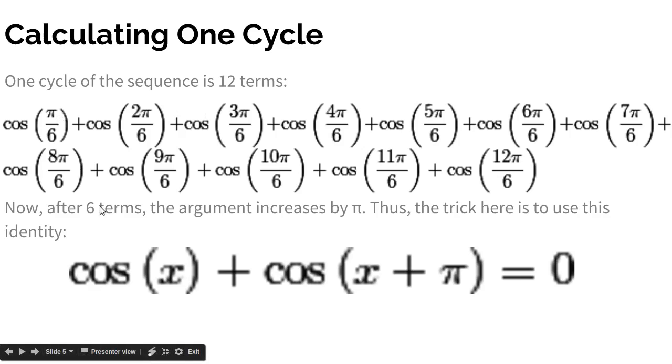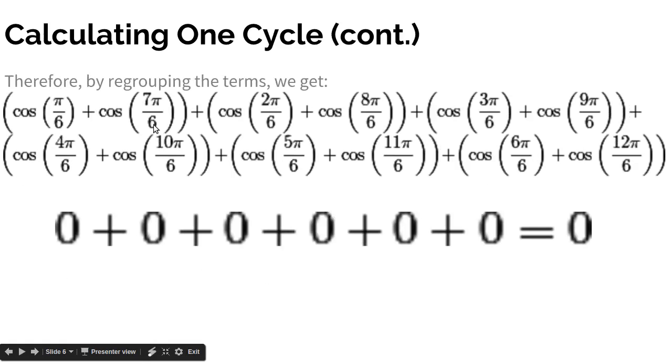You see, after 6 terms, the argument increases by π. And there's another identity with cosine that involves adding the argument by π. Cosine of x plus cosine of x plus π equals 0. So that means when you add π to an argument, and then you add that with the original, it cancels out to 0. So we can regroup the terms into terms with an argument's difference of π. So π/6 and 7π/6, 2π/6 and 8π/6, 3π/6 and 9π/6. And then we regroup all of the terms in such a way.